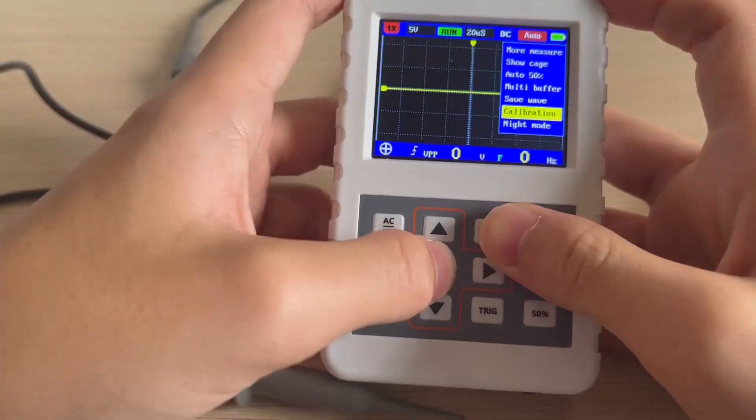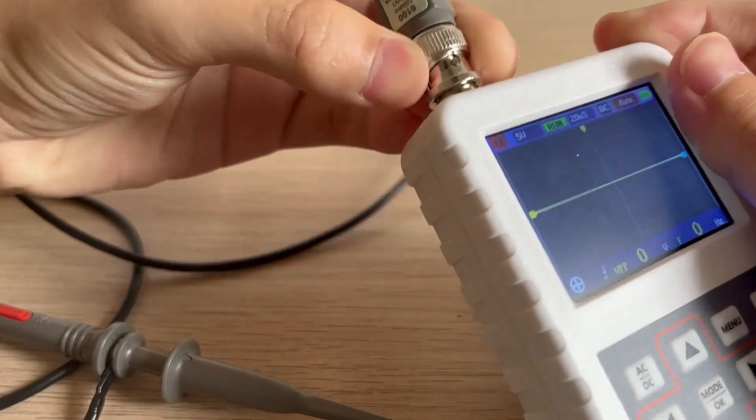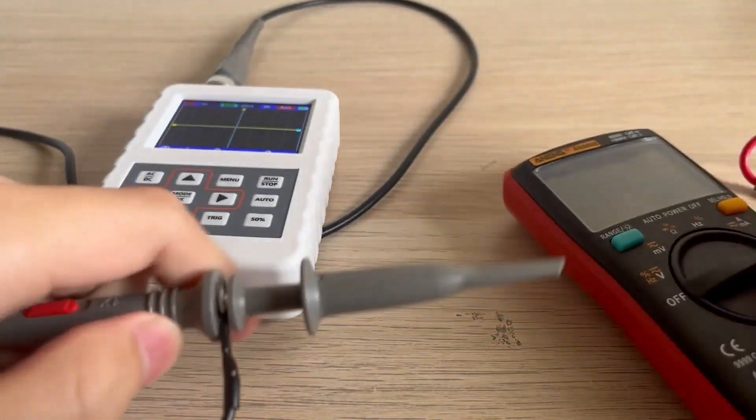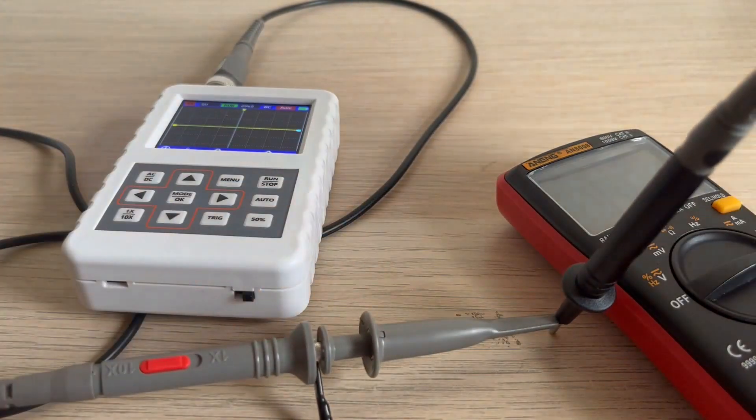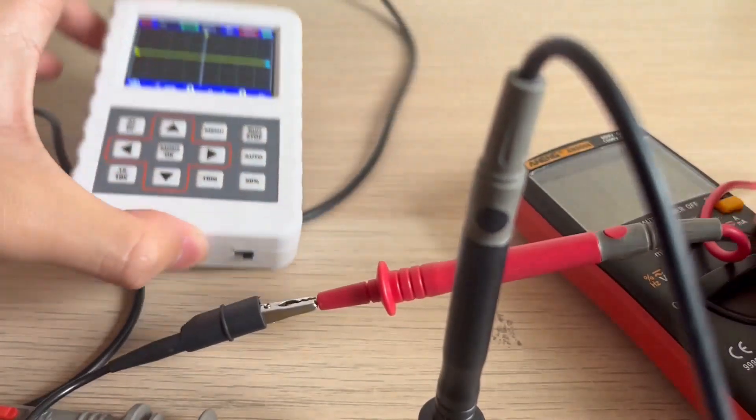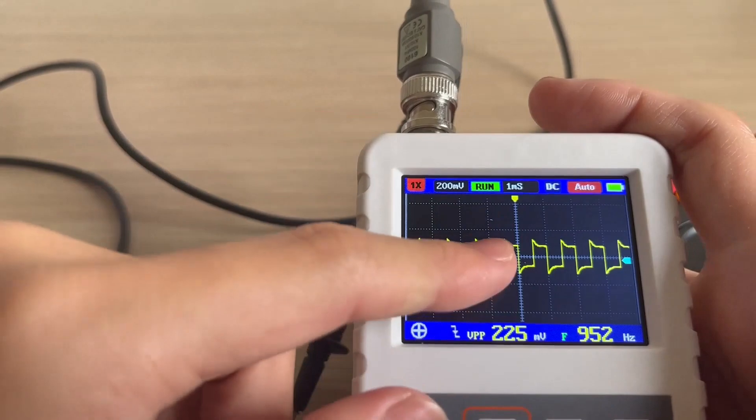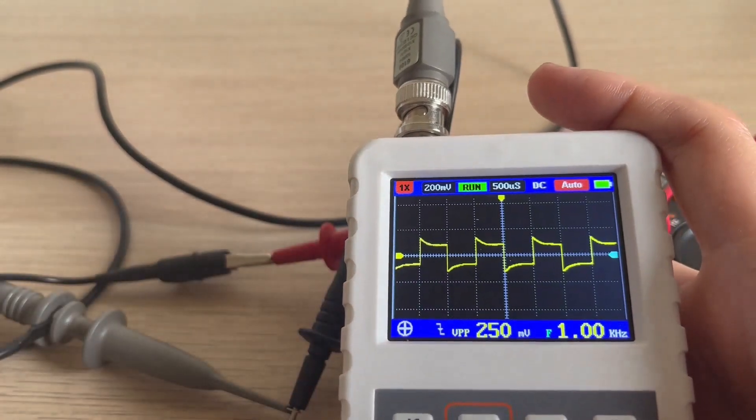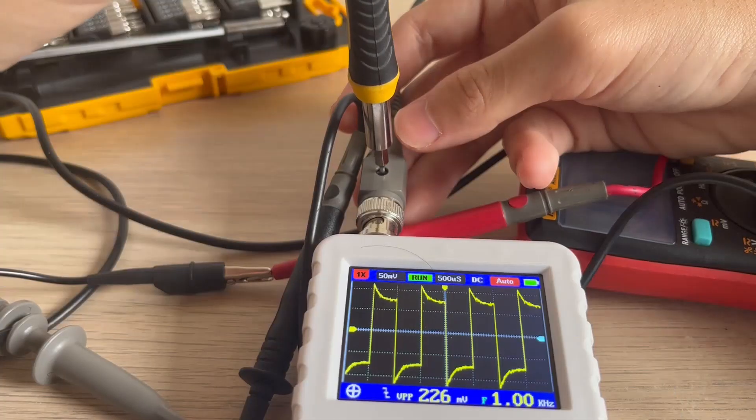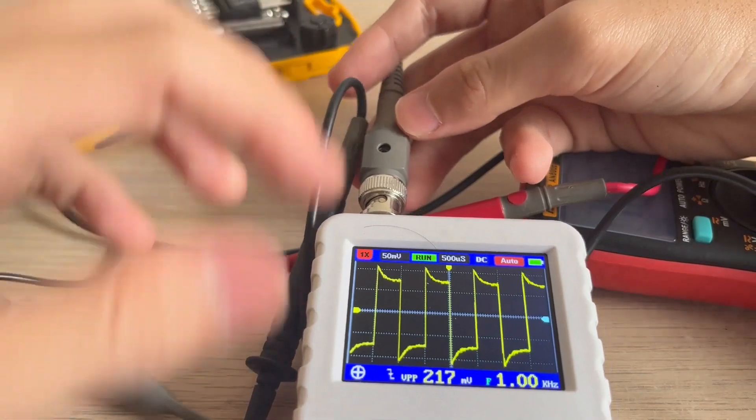I'm going to take out all the probes. Plug it in and now we are going to set the oscilloscope to 10 times attenuation as shown on the instruction and we are going to connect the probes. You can see that the compensation is not that good. So we have to calibrate it using an adjustment screwdriver. I think that's the best I can go to.